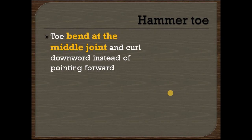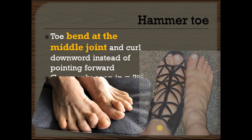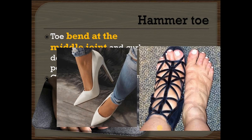The second foot deformity is hammer toe. In hammer toe the toe bends at the middle joint and curls downward instead of pointing forward. This deformity is commonly seen in the second and third toe, as visible in the picture. Sometimes this deformity can also occur due to wearing tight shoes or high heels.